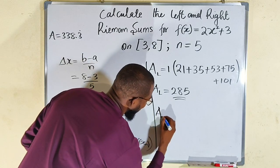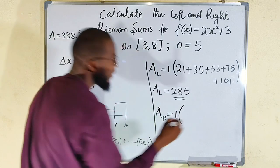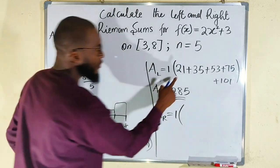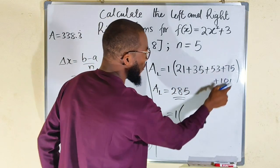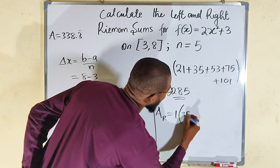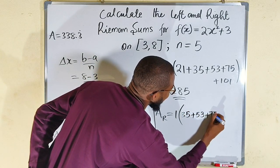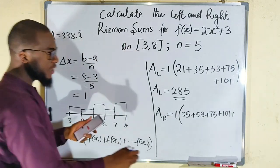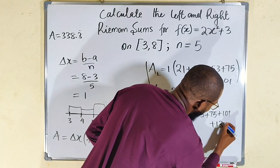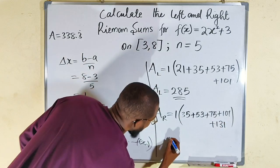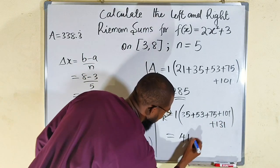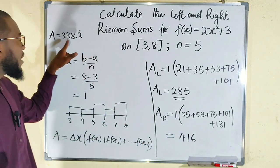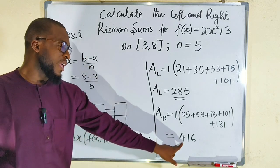Now for the right Riemann sum, the base dx remains 1. This time we use x-values 4, 5, 6, 7, and 8. So we have f(4) = 35, f(5) = 53, f(6) = 75, f(7) = 101, and f(8) = 8 squared times 2 plus 3 = 131. Adding these: 35 plus 53 plus 75 plus 101 plus 131 equals 395... multiplied by 1 gives 416. The right Riemann sum has overestimated the actual area.